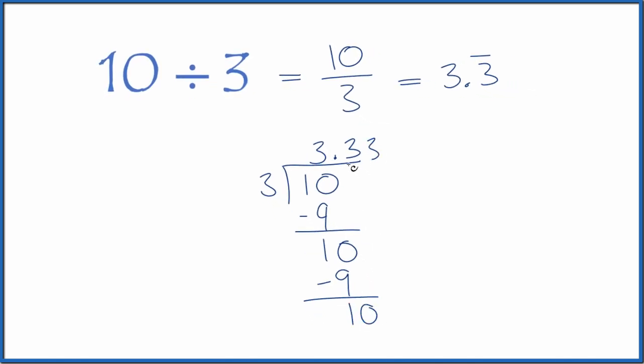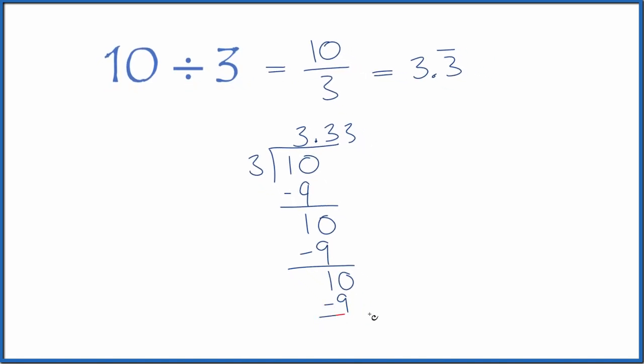Move over 1. 3 times 3 is 9. Subtract, we get 1, call it 10. And it just keeps going. So it's the same thing we found before.